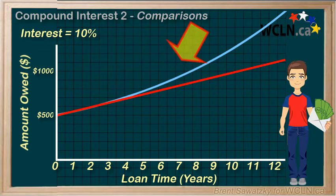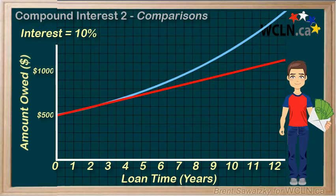Note that in the first few years, there's not a lot of difference between simple interest and compound interest. But as the loan time increases, we eventually see the exponential growth of compound interest really take off, and we can see the difference between simple interest and compound interest really begin to grow. The longer the loan, the more dramatic the difference is.